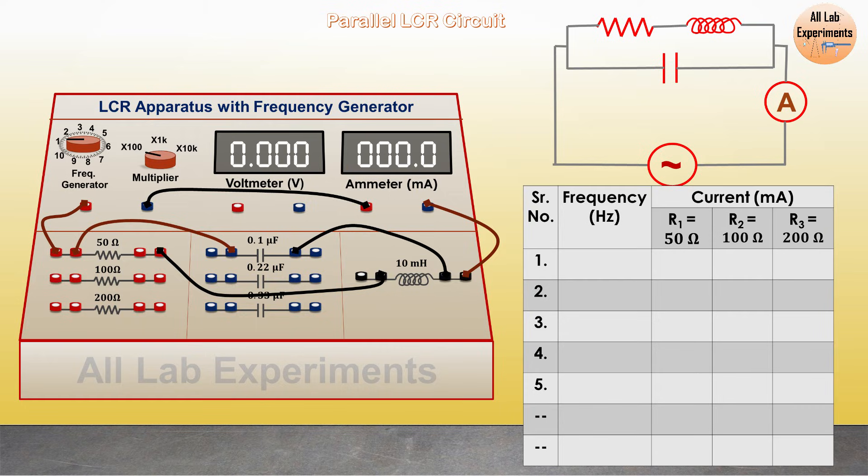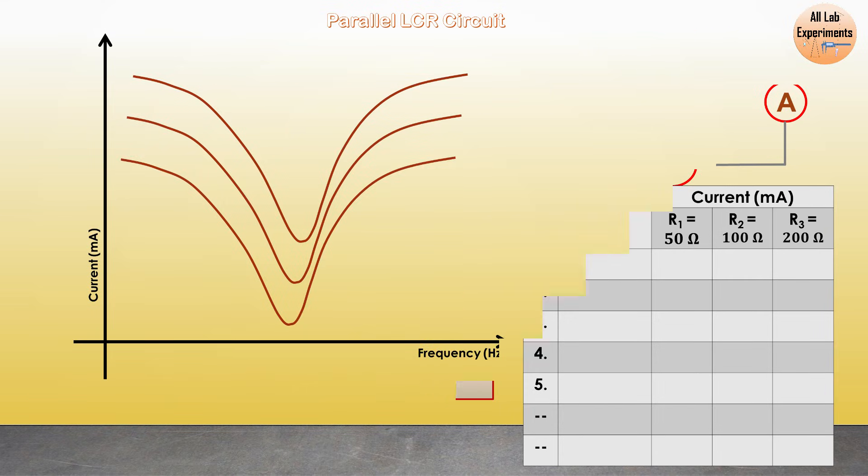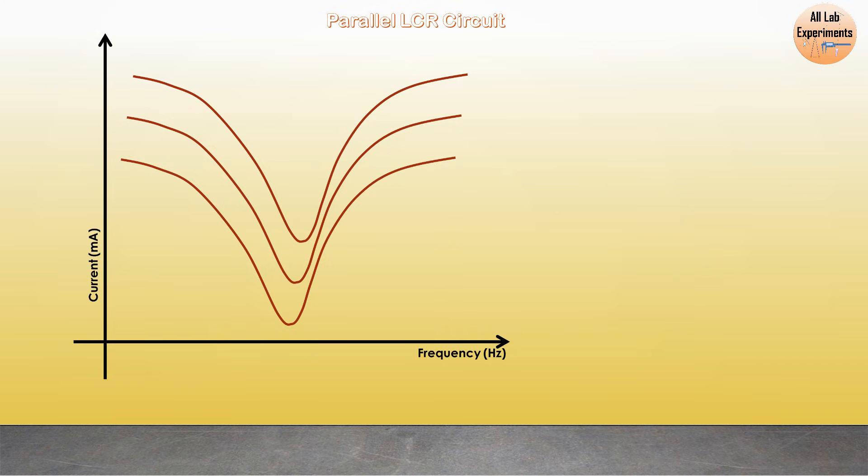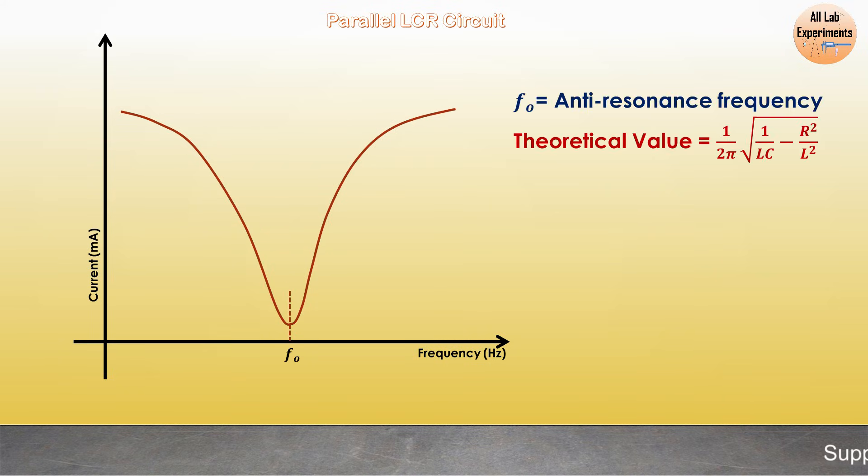Again make a table like before. Change the frequency and for different resistances we can observe the value of current in this circuit. We will obtain similar plots but different anti-resonance frequencies. Let's choose one of them. The anti-resonance frequency f₀ is the frequency when the value of current is minimum.